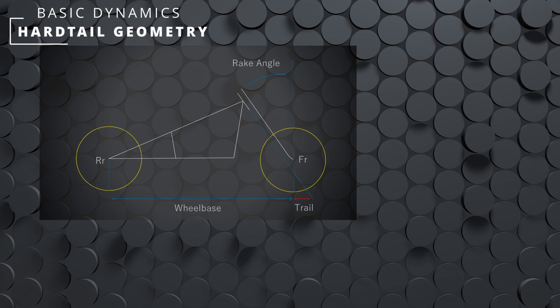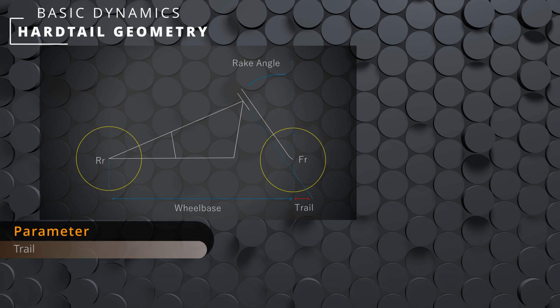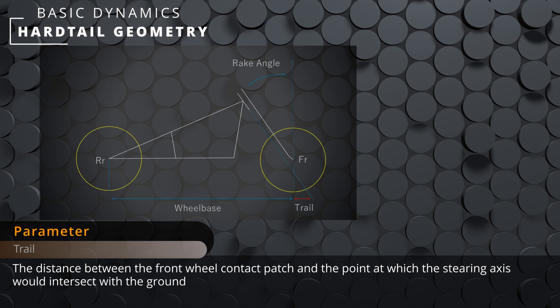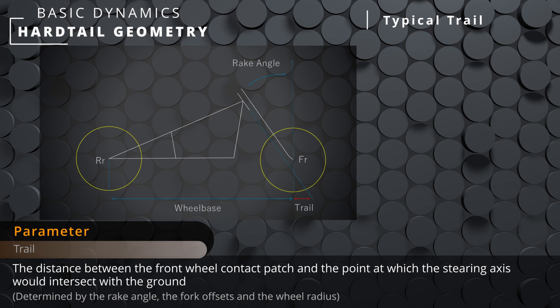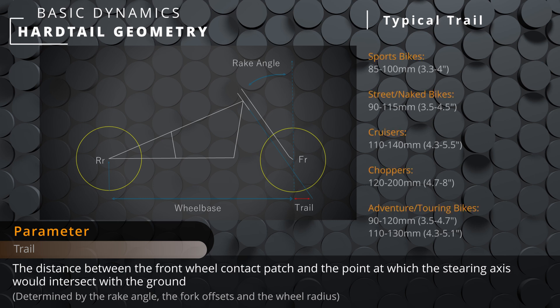Trail is the measurement between where the steering axis intersects the ground back to the centre of the front wheel contact patch. We can see that this value will change in relation to the rake angle, offset, or wheel radius. Bear in mind this is in a static state — when riding, we'll experience dive and squat, which means we'll have shifting weight distribution and changes in suspension travel. As a result, all of this will affect the geometry of the bike, with rake angle now being a variable parameter.